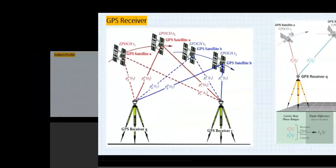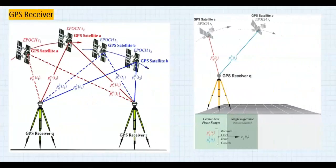Since GPS became functional in 1993, it has gained application in hundreds of areas, even tracking humans. In this video, I will concentrate on construction and civil engineering.